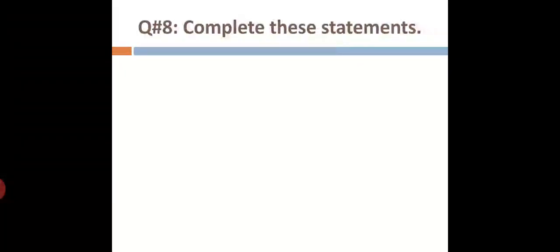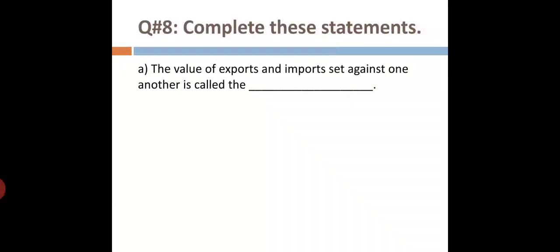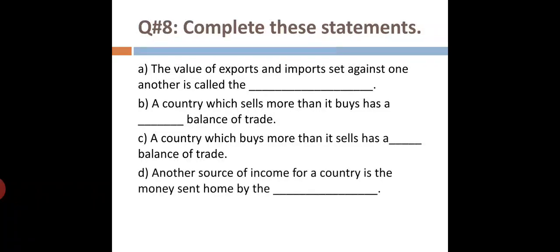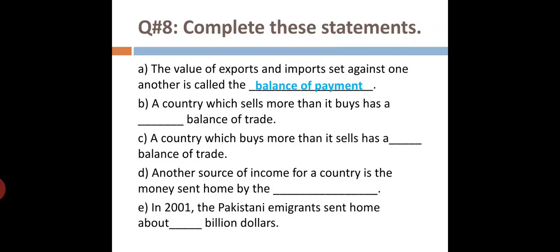In question number eight, you have to complete these statements. The value of exports and imports set against one another is called balance of payment. A country which sells more than it buys has a spare balance of trade. A country which buys more than it sells has a low balance of trade. Another source of income for a country is the money sent home by overseas people. In 2001, the Pakistani emigrants sent home about 2 billion dollars.